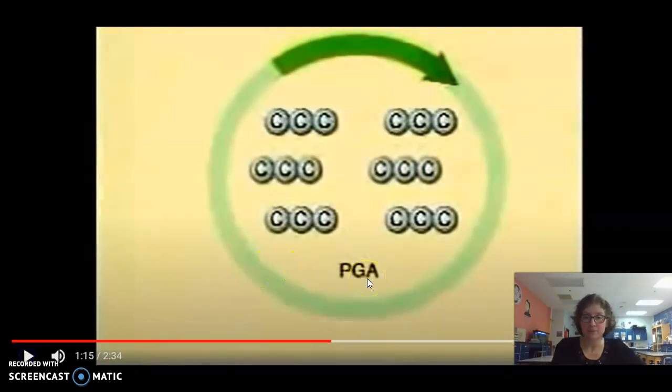PGA is phosphoglycerate. It's still acidic. An acid is not the same as a carbohydrate. So fixation takes it to the point where you have six three-carbon acids, but you don't have sugars yet. In order to get to the sugar stage, you have to reduce them, and that's where the high-energy electrons and the ATP comes in.